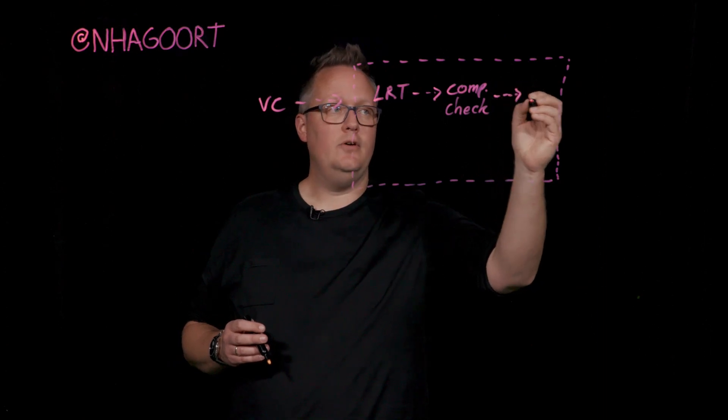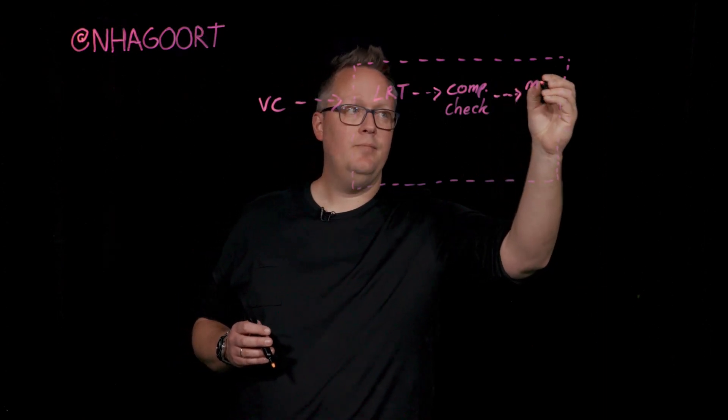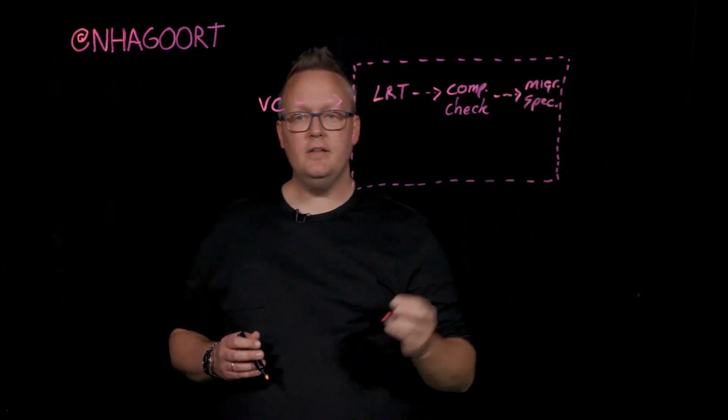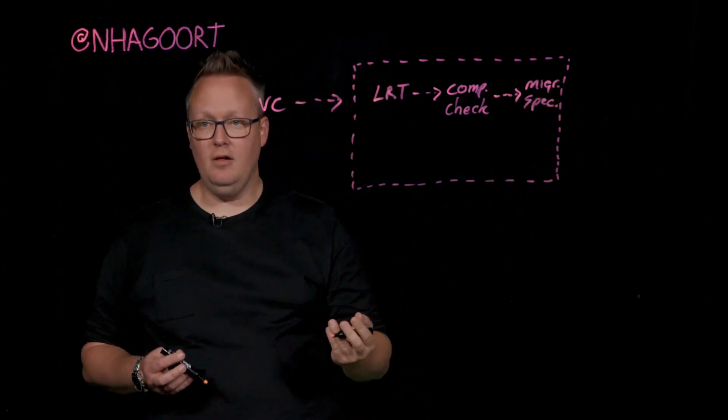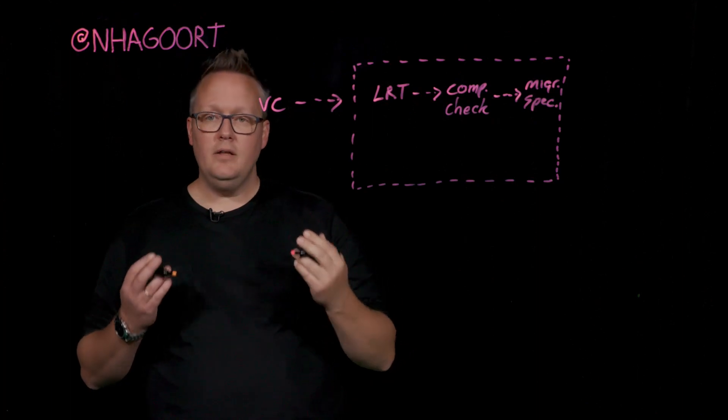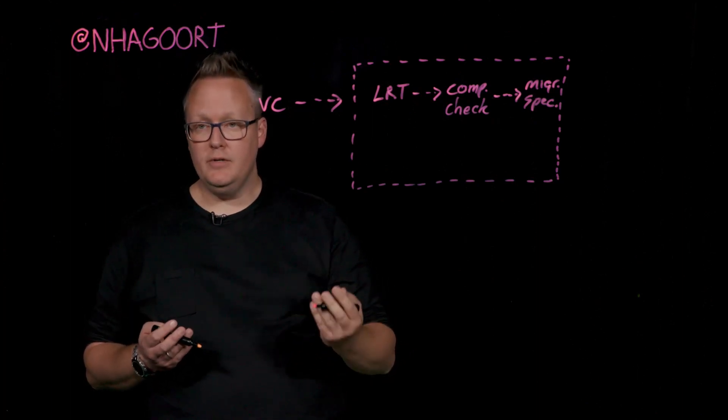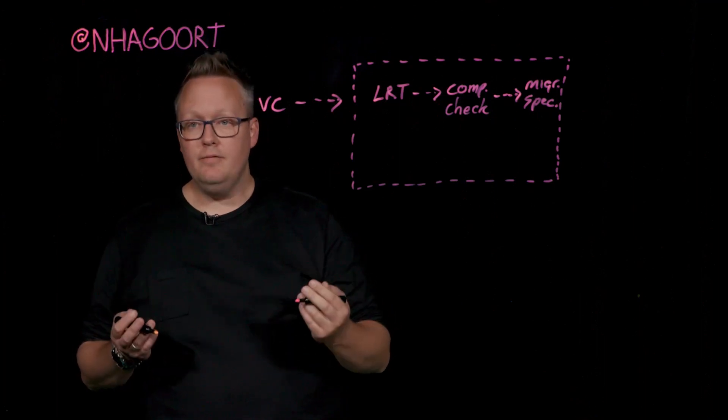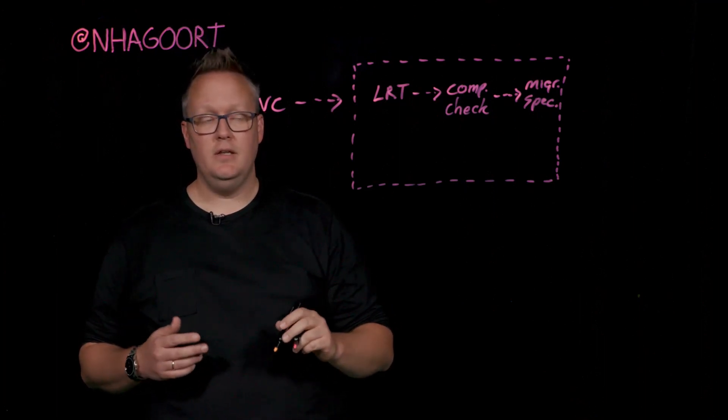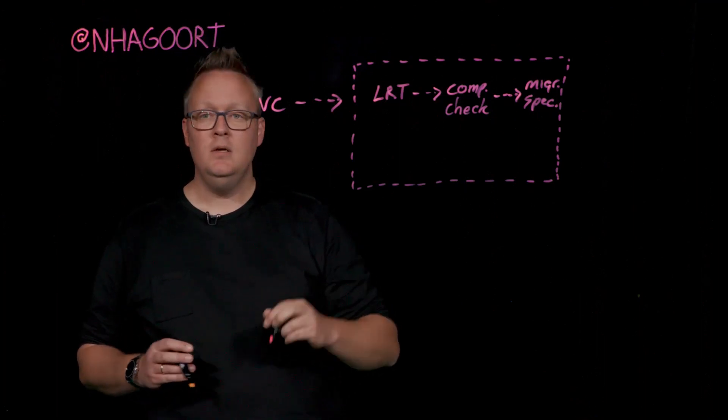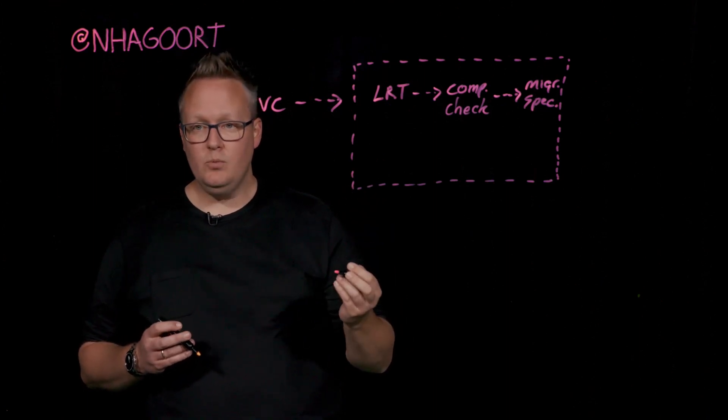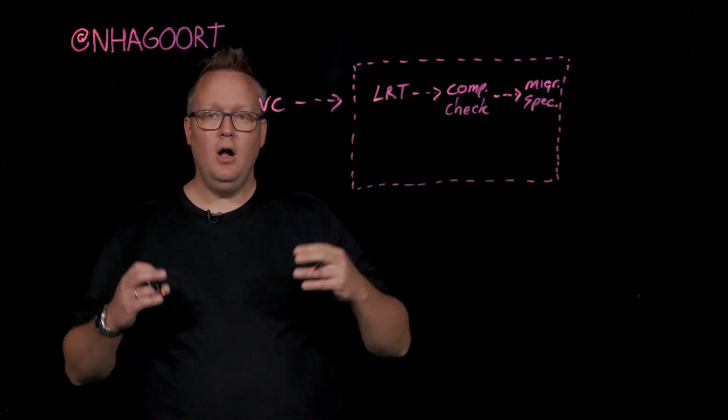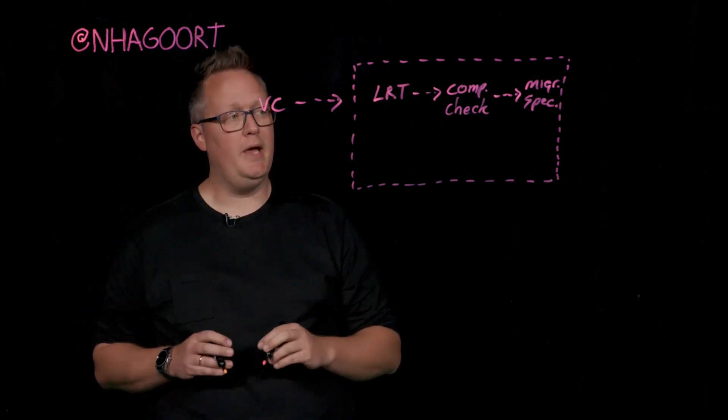This migration spec has a lot of details on the VM itself. So what is the virtual machine hardware that is configured for that VM? What are other VM options that are configured for that specific VM? What about the vMotion network details between the source and destination ESXi hosts? All that information is bundled in this migration spec.